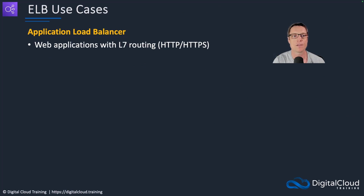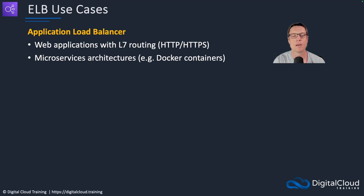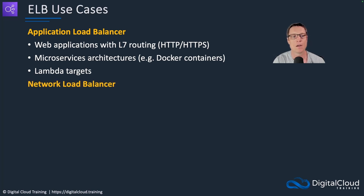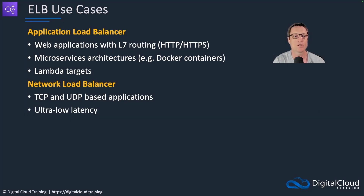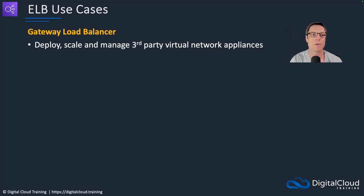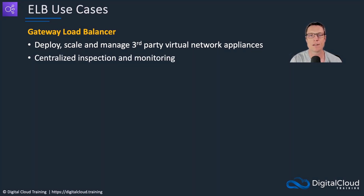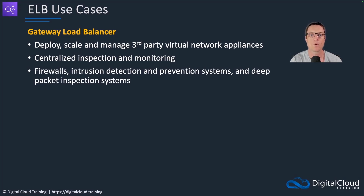For the application load balancer, use it when you have web applications with HTTP and HTTPS and you need layer seven routing capability. It's good for microservices architectures like Docker containers and Lambda targets. With the network load balancer, use it for TCP and UDP based applications requiring extremely low latency, high performance, static IP addresses, and VPC endpoint services. For the gateway load balancer, use it when you want to deploy, scale, and manage third-party virtual network appliances — giving you centralized inspection and monitoring capabilities for firewalls, intrusion detection, intrusion prevention systems, deep packet inspection systems, and other similar virtual network appliances.